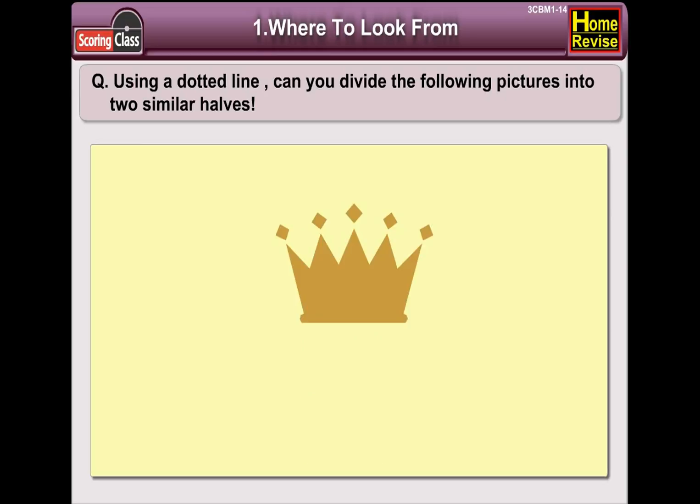How about this crown? This crown can be divided into two similar halves in this way. Also, the frog will be divided into two similar halves if we draw a vertical line.